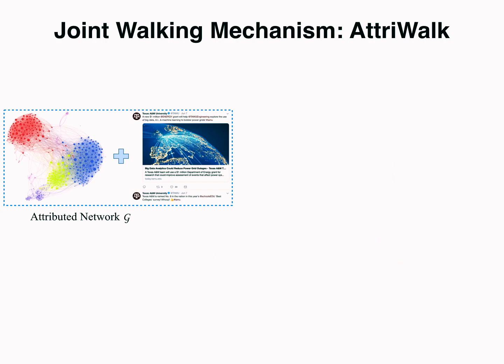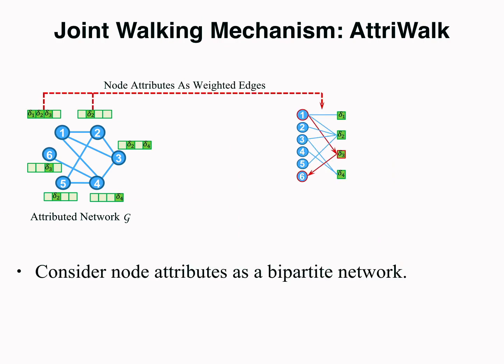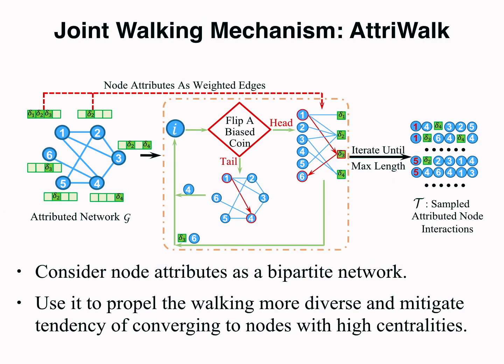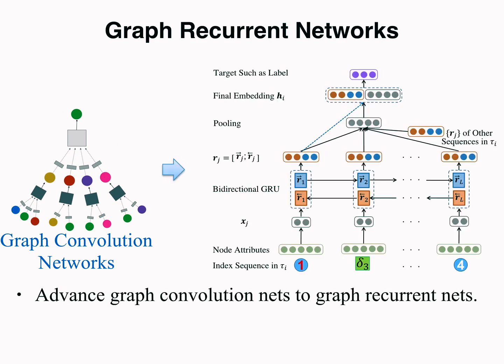Specifically, the first component, Atriwalk, considers the attributed networks as a bipartite network, and uses it to propel the walking more diverse, and mitigate the tendency of converging to nodes with high centralities. Atriwalk also enables us to advance the prominent deep network embedding model, graph convolutional networks, towards a more effective architecture named Graph Recurrent Networks, GRN.